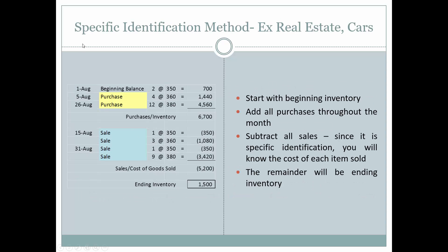The first method we'll look at is specific identification. This is used in real estate, because we know exactly how much a property costs, and for cars, because each car has an individual VIN number.